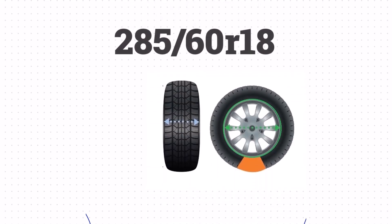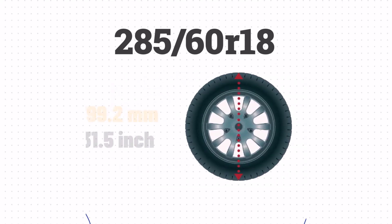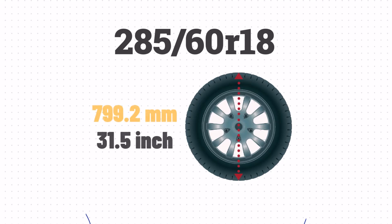Now that we've got the width, sidewall size, and wheel size, we can take all that together and get the height of the tire. We'll take the sidewall size, add the wheel size, and then add the sidewall size one more time. That gives us a height of 31.5 inches.